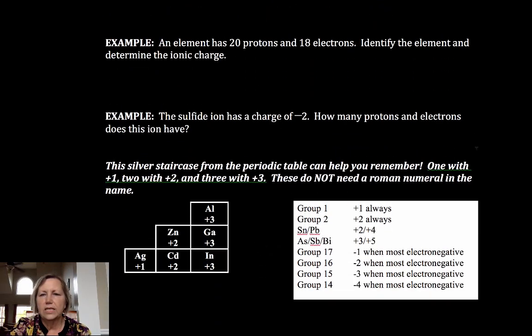So let's take a look at some examples of ions. If I have an element with 20 protons and 18 electrons, then 20 protons minus 18 electrons gives me a plus 2 charge.